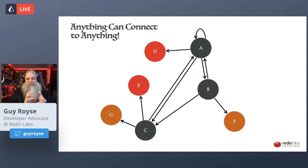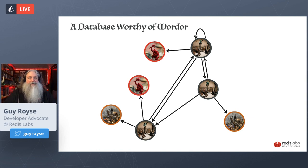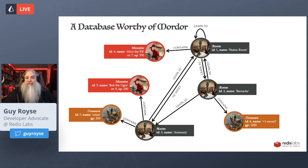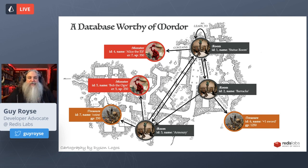That's graph theory super condensed in five minutes. A graph database is when we lay data over top of this structure. Here we've added types — these nodes now represent types within our dungeon: rooms, monsters, and treasure. Those nodes can have properties tagged onto them. So we'll see a node like Alice the elf with an ID of four and a challenge rating. Rooms have names and IDs, treasure has a gold piece value, and the relationships themselves can also have data — a type that says this room leads to another room, or this room contains a monster or treasure.